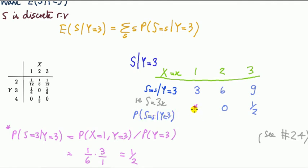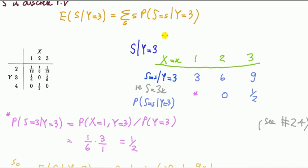Now let's compute the conditional probabilities. For example, the probability that S equals three given Y equals three: using the conditional probability formula, that's the joint probability that X equals one and Y equals three — which is one-sixth — divided by the marginal probability that Y equals three, which sums to one-third. So that gives one-half. Similarly we find the others, giving probabilities one-half, zero, and one-half.